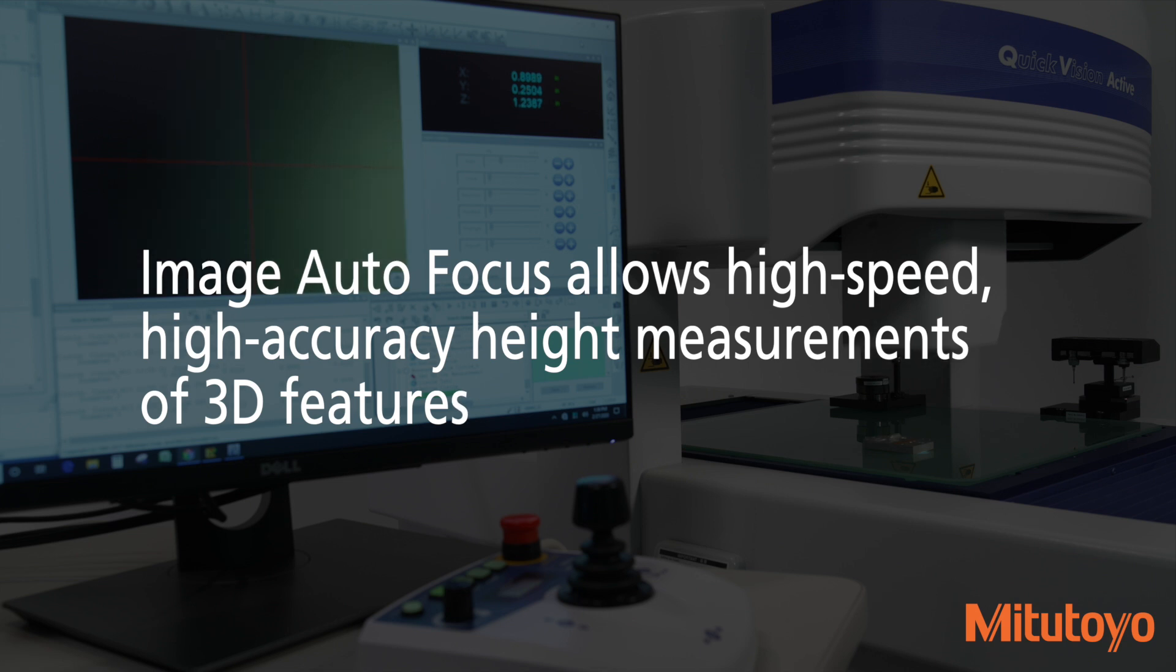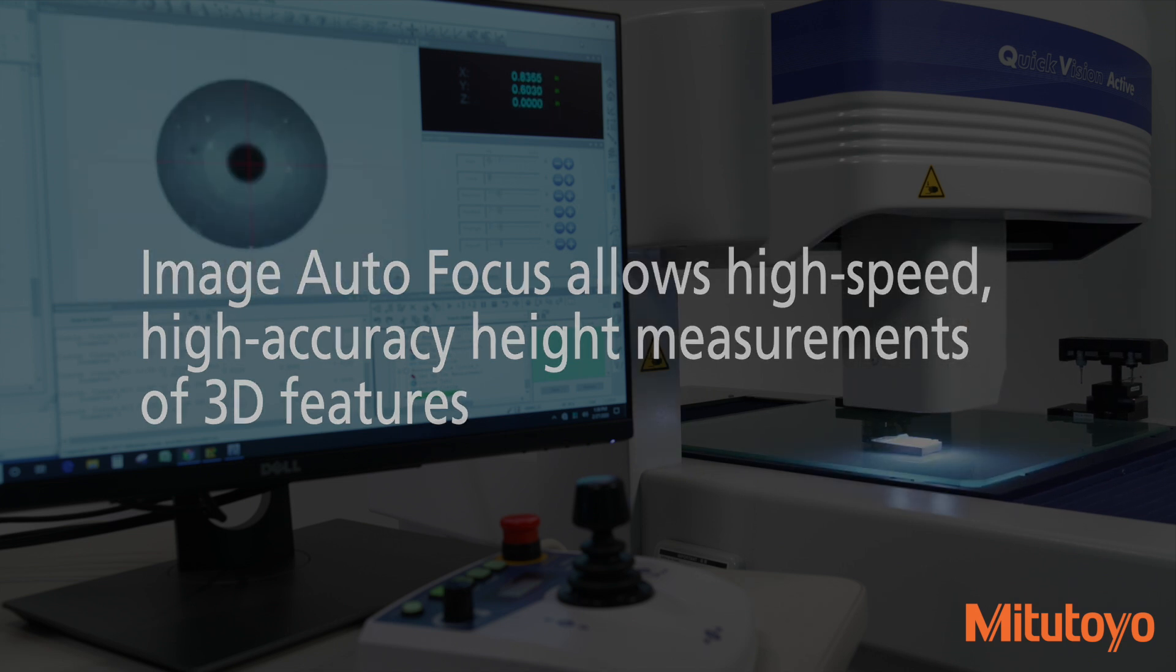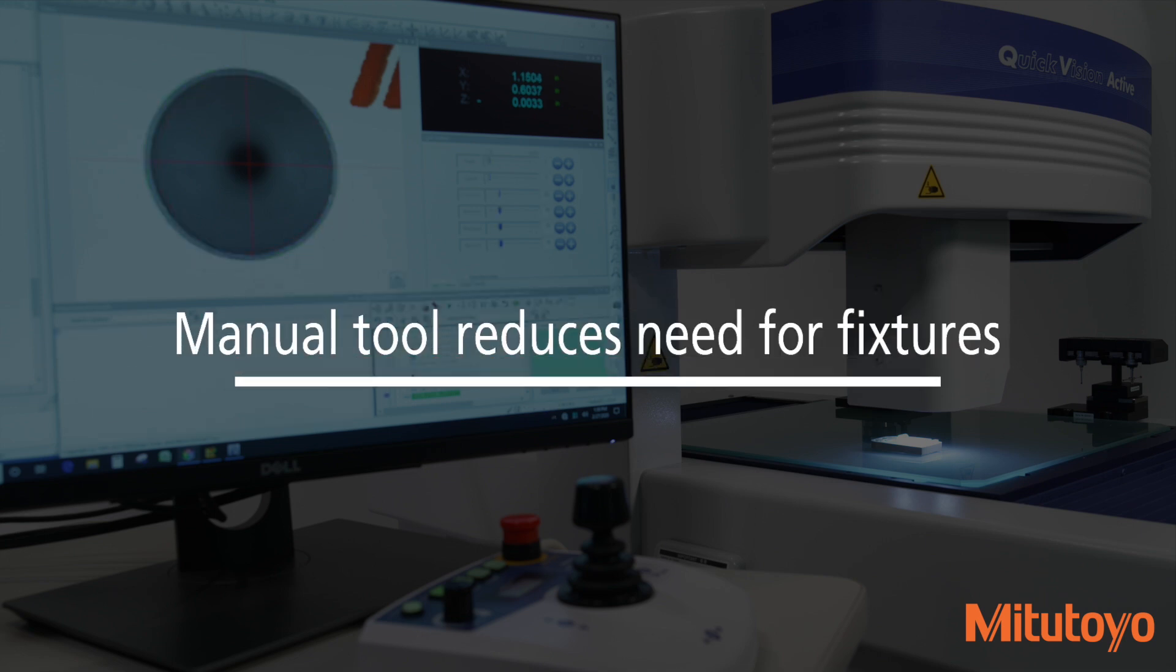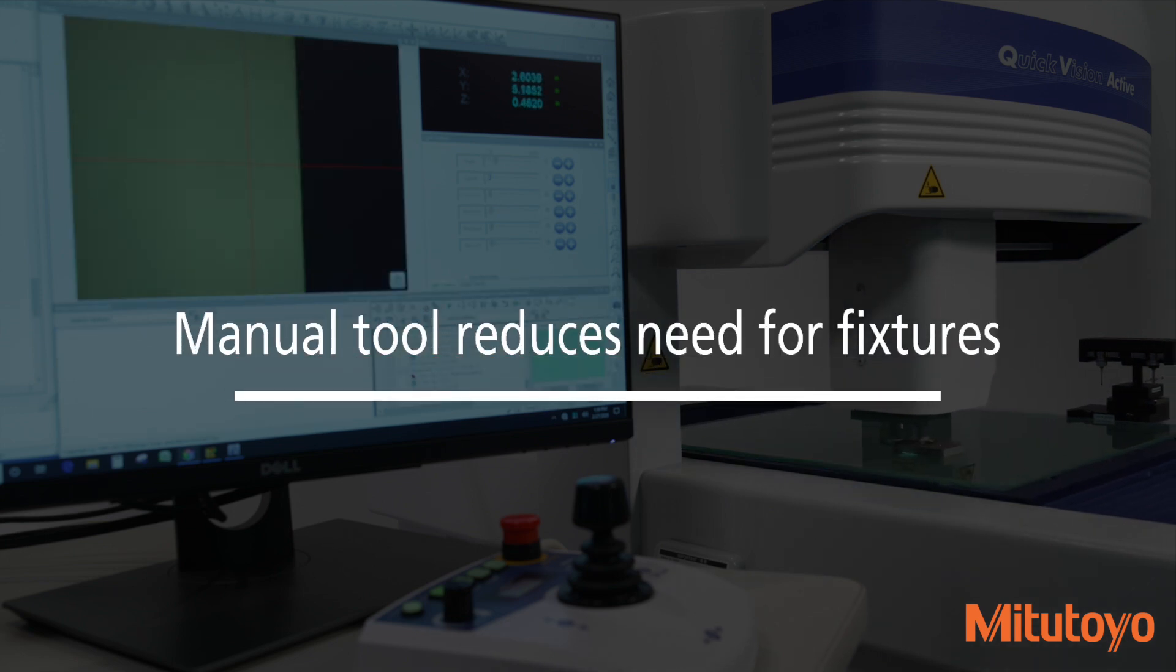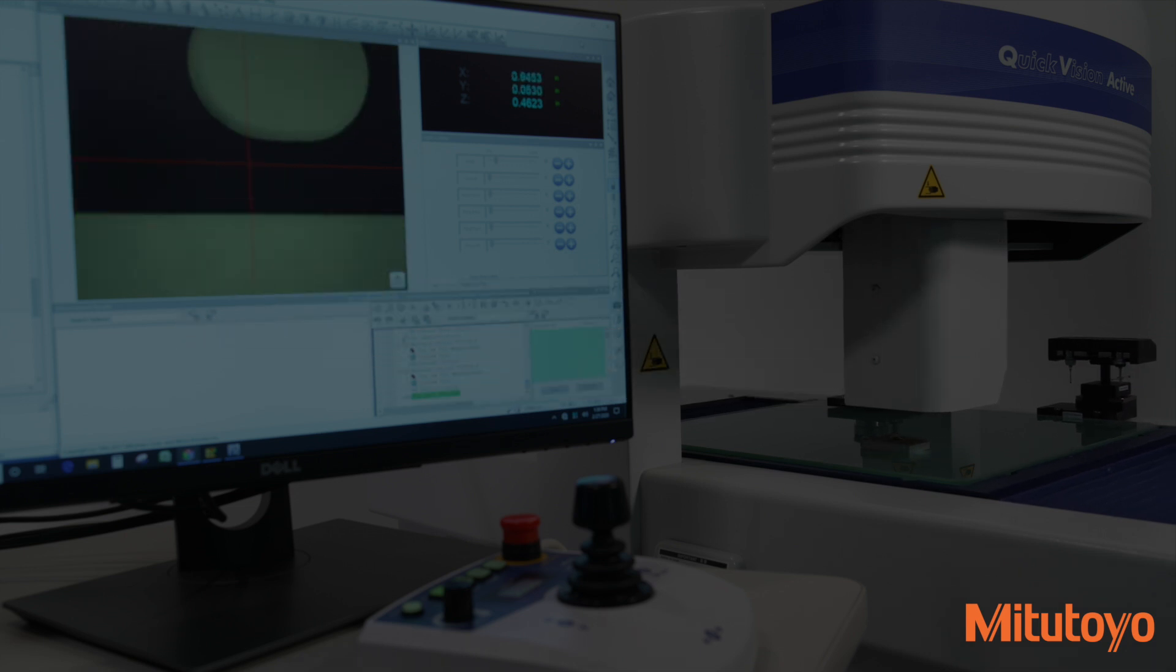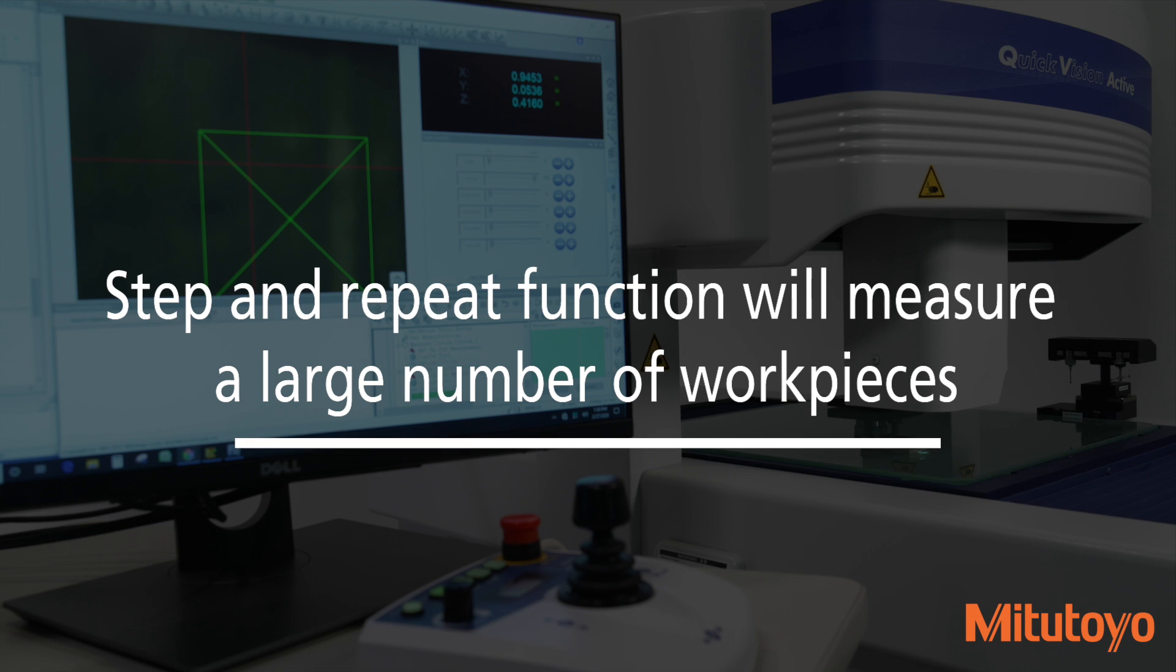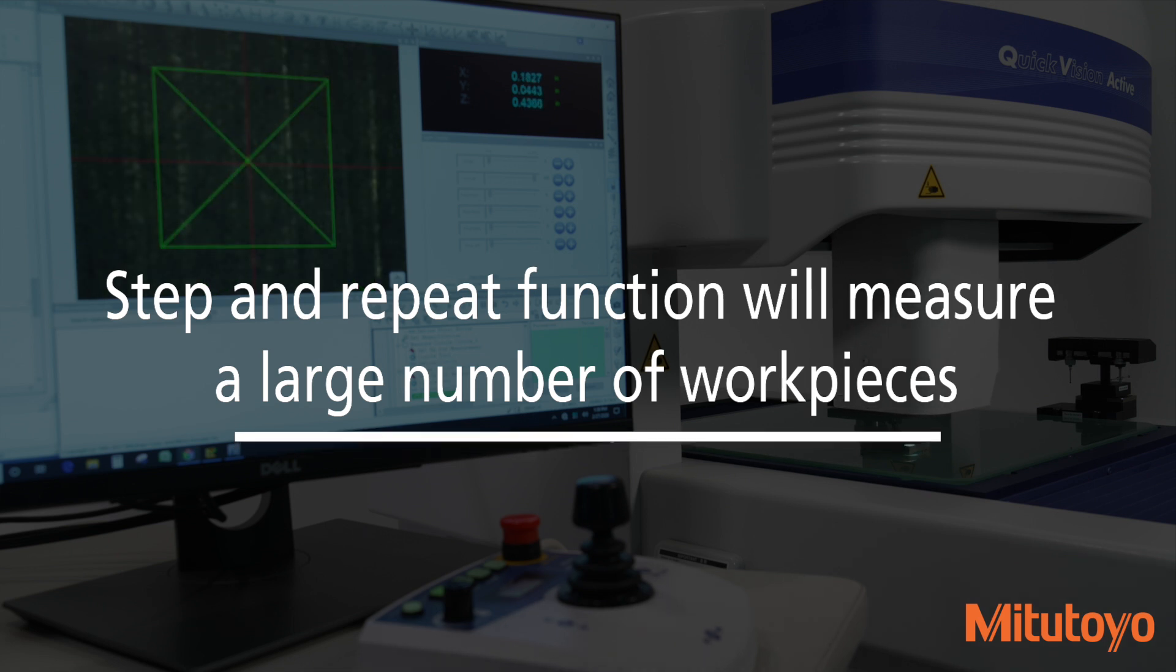Image autofocus allows high-speed, high-accuracy height measurements of 3D features. The QV Active's manual tool reduces the need for fixtures as the zero point is created anywhere on the part, fixture or stage. The step and repeat function will measure a large number of work pieces on the stage or fixture in one easy operation.